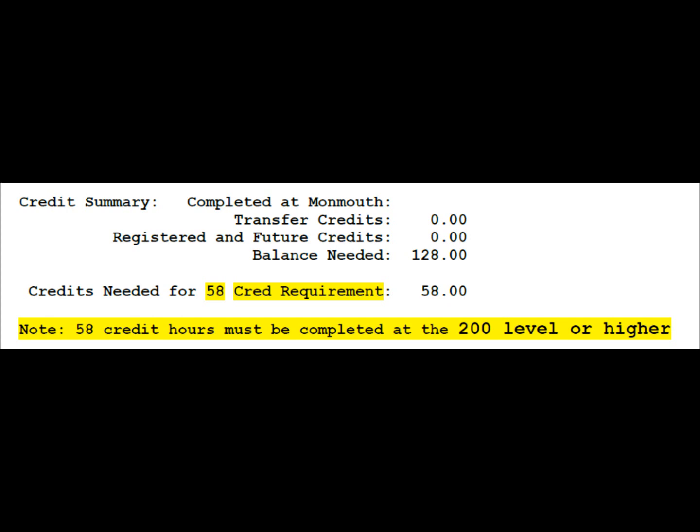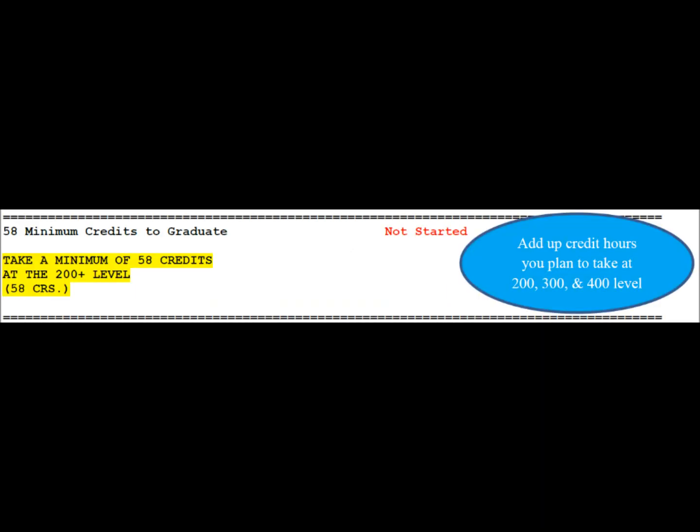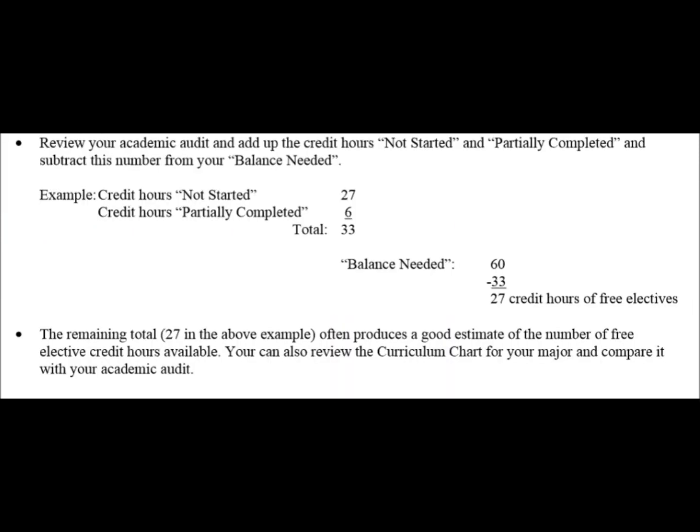If it's more than 128, then you probably have run out of free electives. Also, notice that students must take at least 58 credit hours at the 200 level or higher. Now, try your best to determine how many free electives you have available. Free electives are gold when it comes to study abroad — they can be thought of as 'take whatever you want' credits.